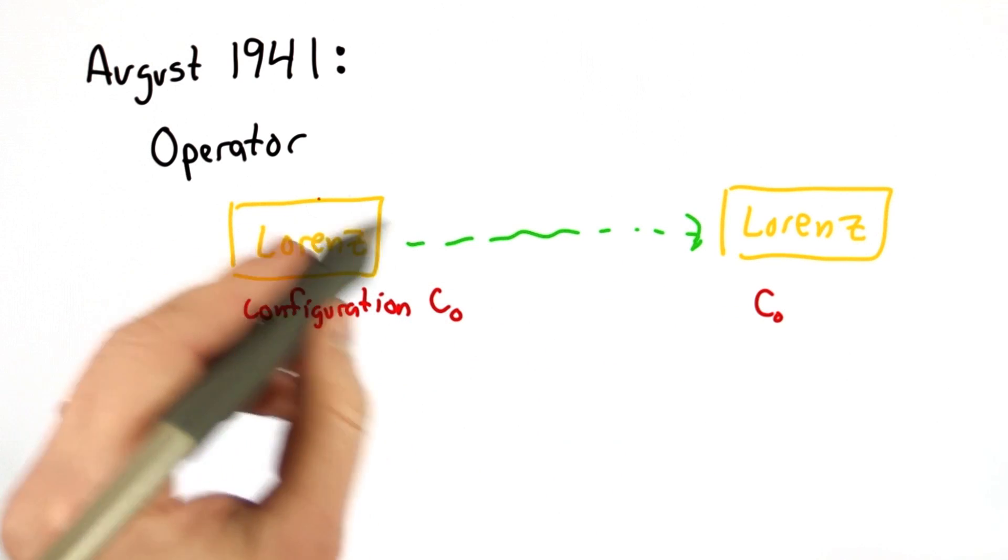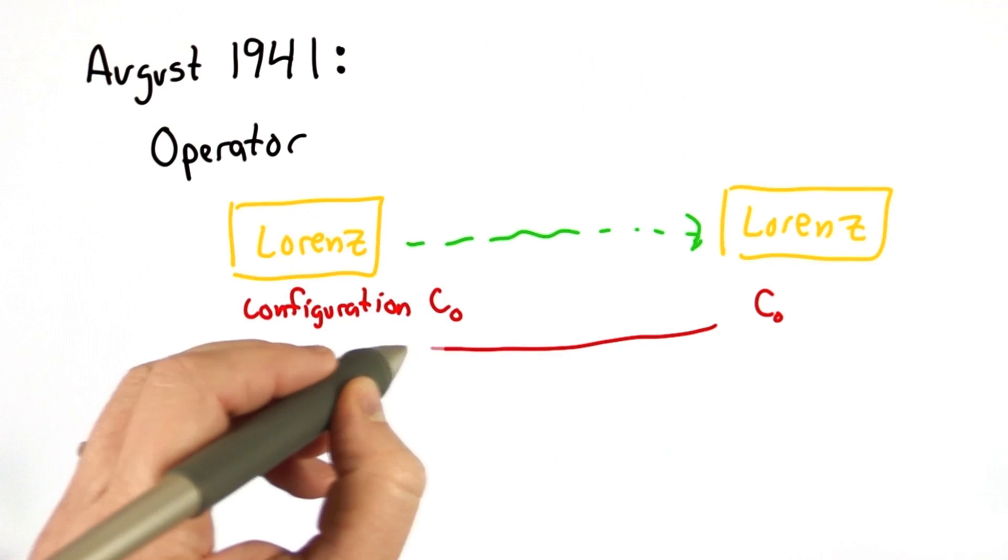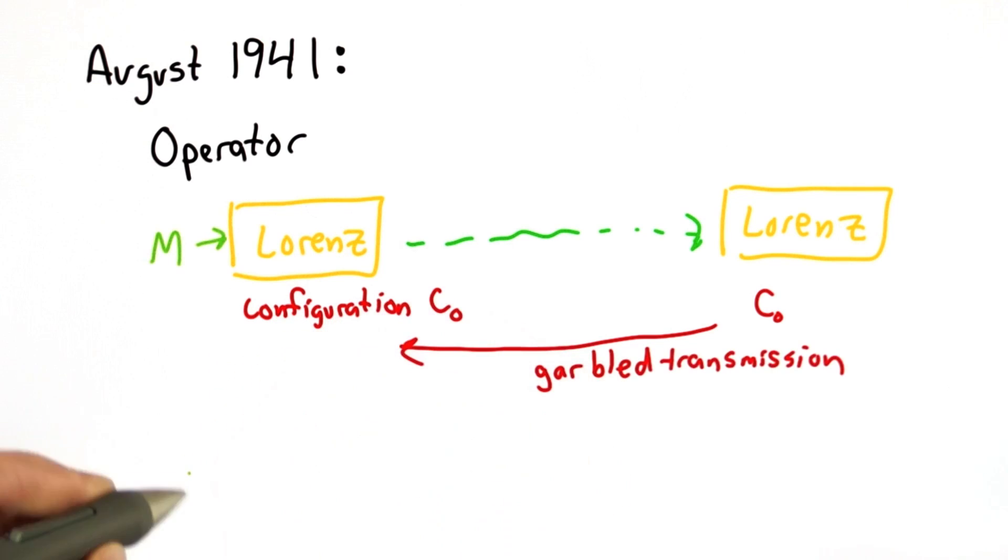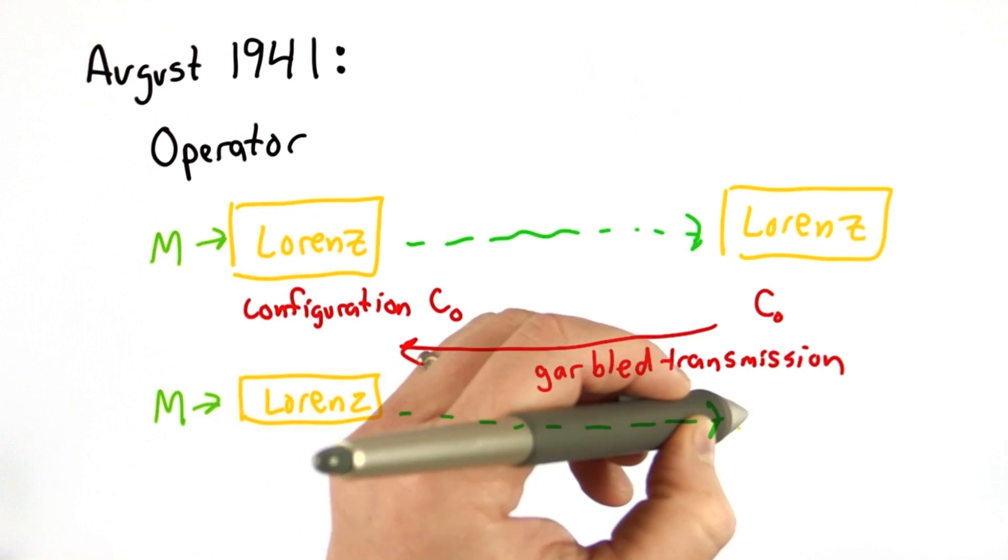In this case, the operator sent the message. The receiver did not receive it, so the receiver said 'garbled transmission, please resend.' The annoyed operator had to send the message again over the insecure channel, and this time it was received.